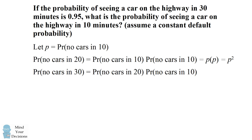We then have the probability of seeing no cars in 30 minutes is equal to the probability of seeing no cars in the first twenty minutes, times the probability of seeing no cars in the next 10 minutes which is equal to p squared times p or equal to p cubed.